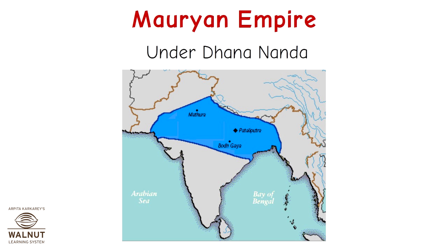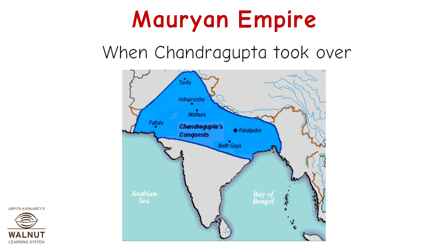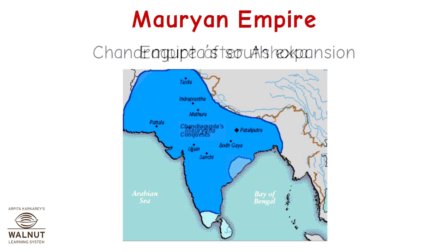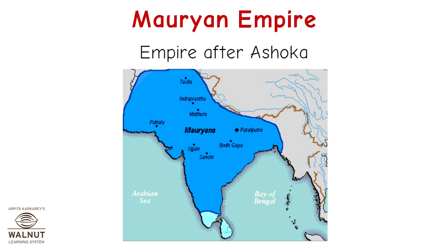The Mauryan Empire in the 5th century: under Dhanananda, when Chandragupta took over, Chandragupta's northern expansion, Chandragupta's southern expansion, and the empire after Ashoka.